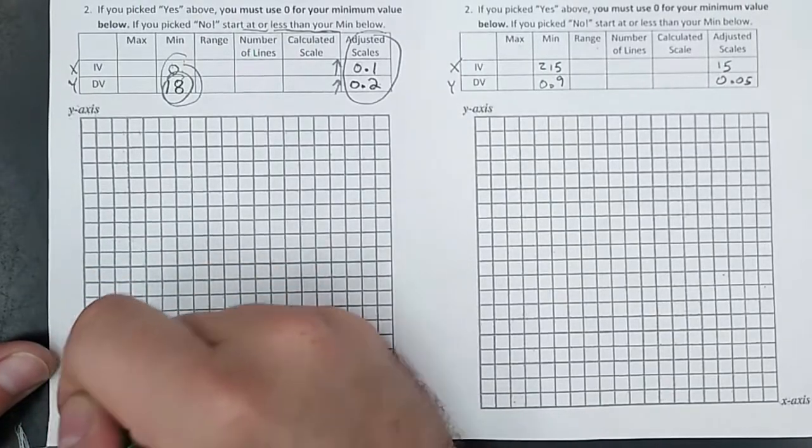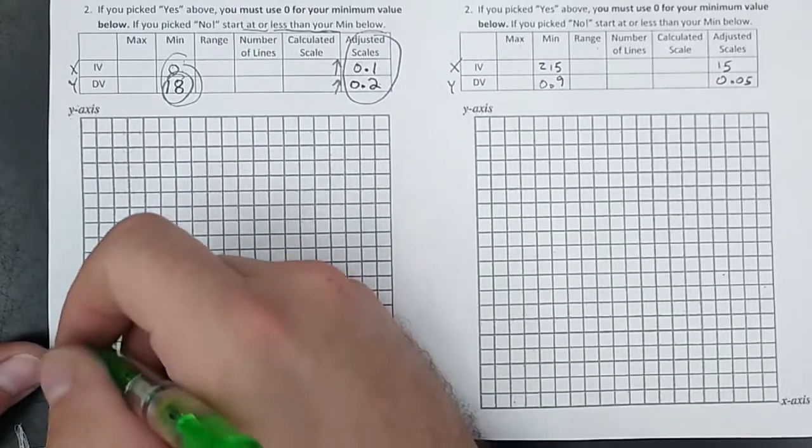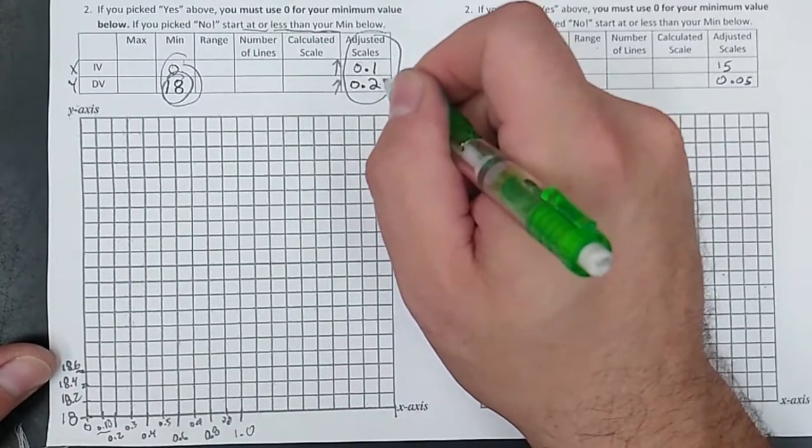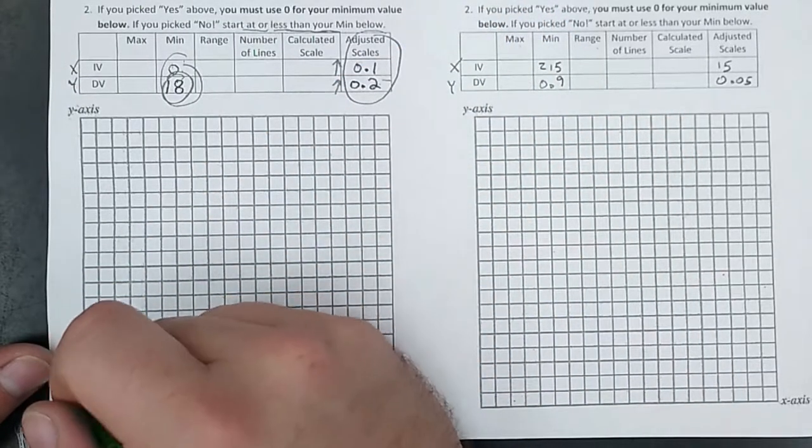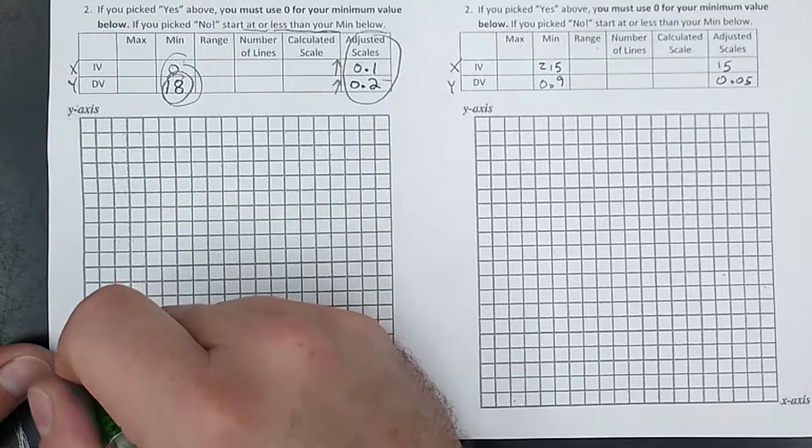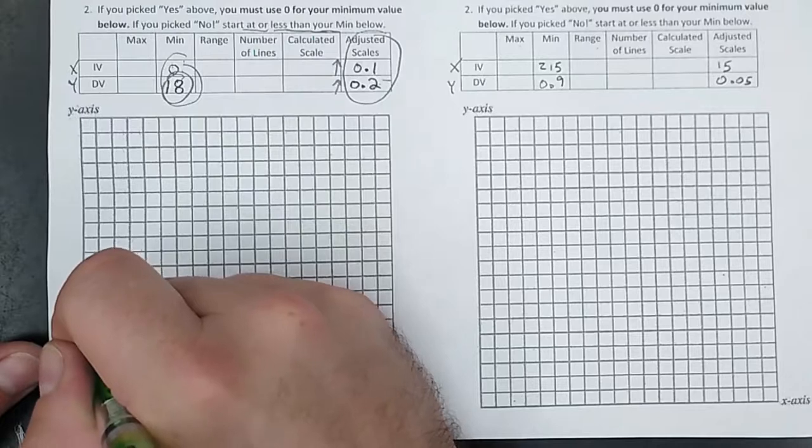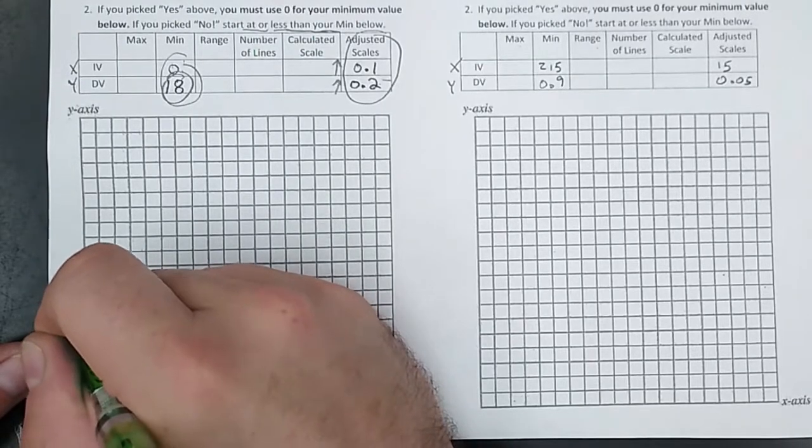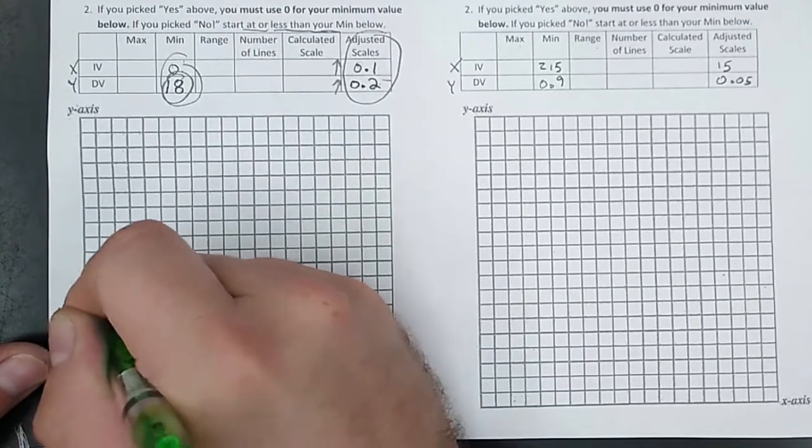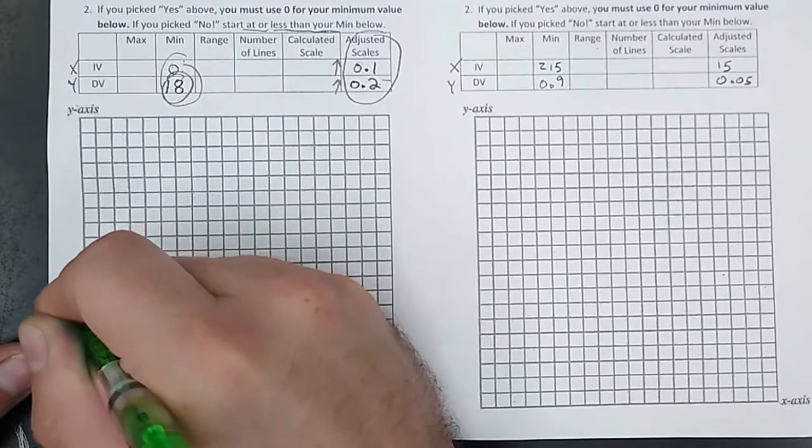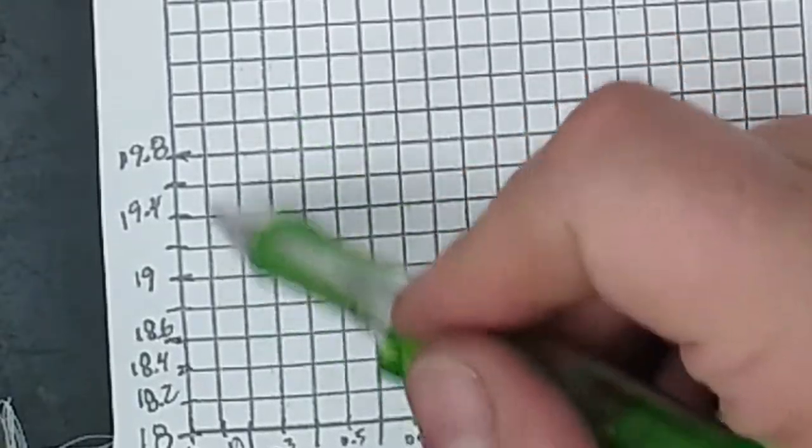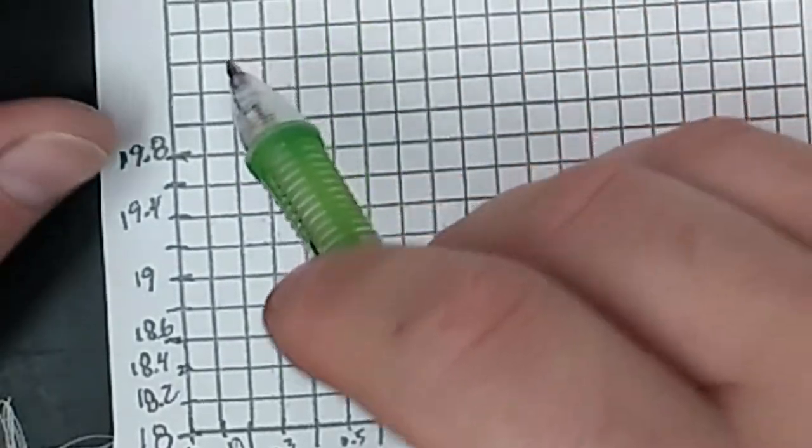Now you'll notice this is pretty cramped. You have to count every line. Every line is still worth 0.2, but if you want to label every other line, that's fine. So for example, 18.6, that would be 18.8. Right there would be 19 dead on. 19.2, 19.4, 19.6, 19.8. Notice I'm not labeling every single line, but I am counting every line.